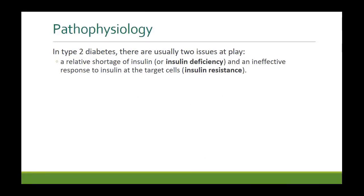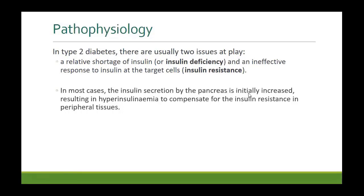Regarding the pathophysiology of type two diabetes — in type one the problem was destruction of beta cells. In type two, there are usually two issues at play: a relative shortage of insulin, and an ineffective response to insulin at the target cells, known as insulin resistance. With this resistance, beta cells will try to produce more insulin to overcome it, so there will be hyperinsulinemia in the initial stages of type two to compensate for the insulin resistance in peripheral tissues.